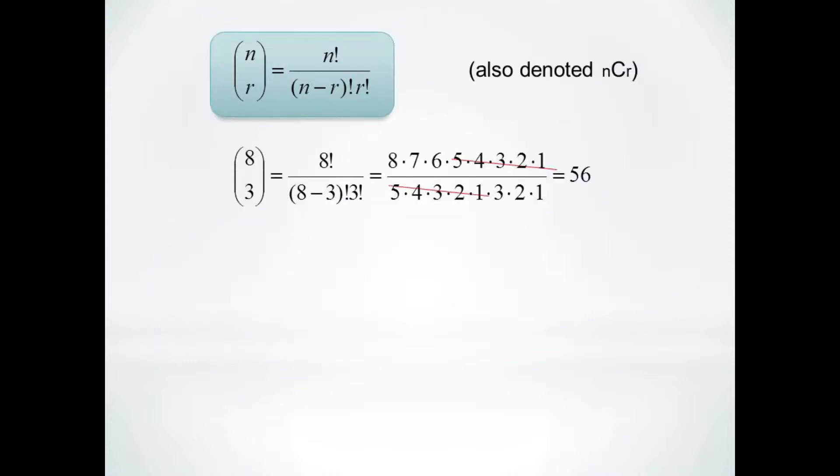First we have 8 choose 3. By our formula, this is 8 factorial over 8 minus 3 factorial 3 factorial. So 8 factorial over 5 factorial 3 factorial.